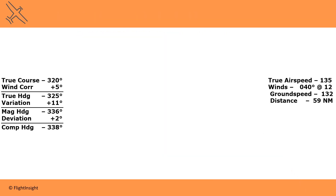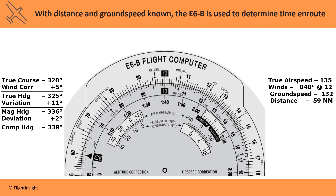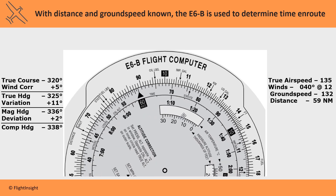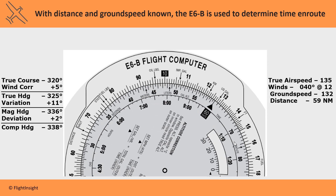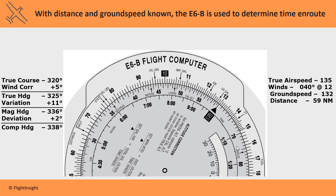Finally, we can use the other side of the E6B to determine time en route. Now that we know distance and ground speed, if we line up the black arrow over the 60 box on the inner scale with the ground speed of around 130, we can then read the time en route. We'll find the trip distance of 59 miles on the outer scale and line that up to find the time en route from the inner scale — about 27 minutes. Your E6B has instructions to use this too, written on the card for test day.